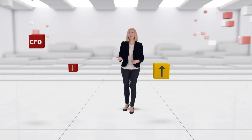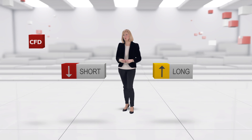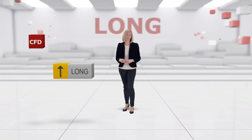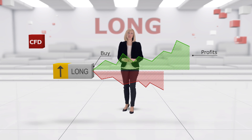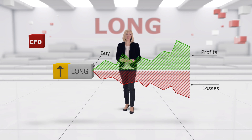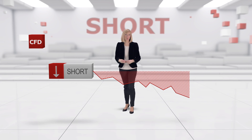Another main benefit of CFD trading is that you can profit from both rising and falling markets — we call that going long or going short. Go long if you expect the market price of the underlying asset to go up, and then your profits will rise in line with that increase. In the same way, your losses will increase if the price of the underlying asset falls. Essentially, going long is just like buying a traditional stock.